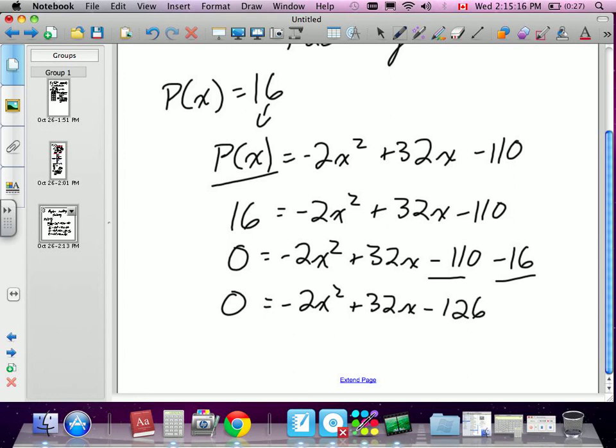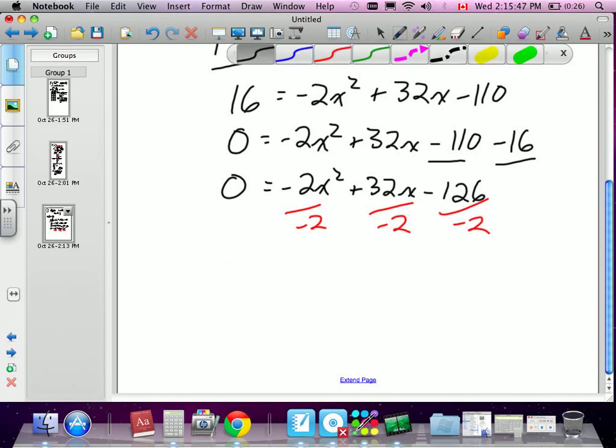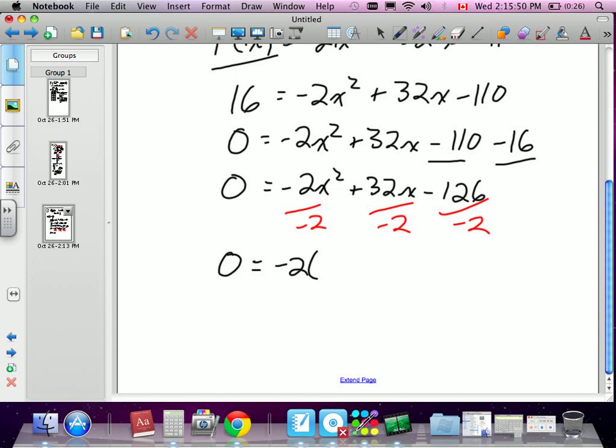So I'm going to factor, and I'm going to be setting whatever my two factors are, our brackets, equal to 0. But because we moved the 16 over and incorporated it into the equation, we're actually solving for P(x) = 16. So this is going to give us the two values when profit is $16,000. We're going to use the same method we did before with factoring. We're going to take out the -2 common factor. So 0 = -2(x² - 16x + 63).